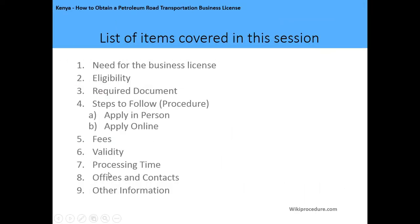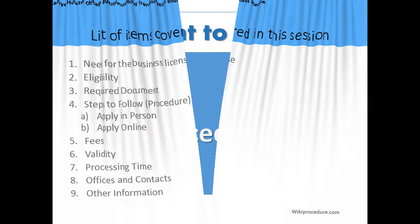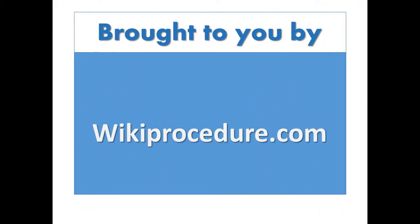The topics we'll cover in this session include: the need for the business license, eligibility, required documents, steps to follow, making the application, fees, validity period, processing time, office location, contact information, and any other relevant information. This presentation is brought to you by WikiProcedure.com.